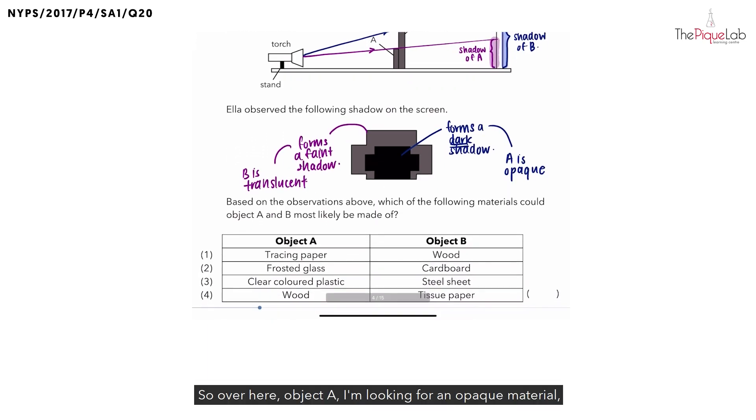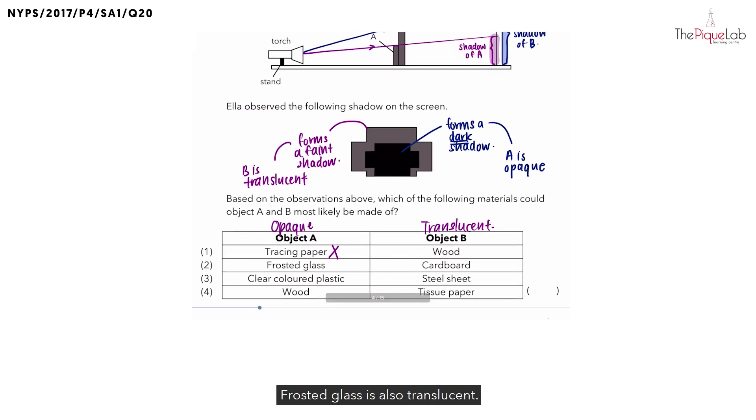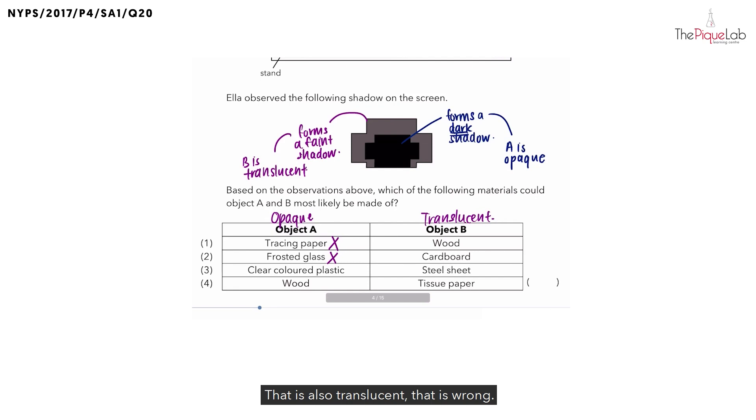Object A, I'm looking for an opaque material. For object B, I'm looking for a translucent material. Let's take a look at our options. For option 1 for A, tracing paper, nope, tracing paper is translucent. What about number 2, frosted glass? Frosted glass is also translucent. Option 3, clear colored plastic. That is also translucent. That is wrong. And the last one, wood. Wood is an opaque material. Finally, double check.